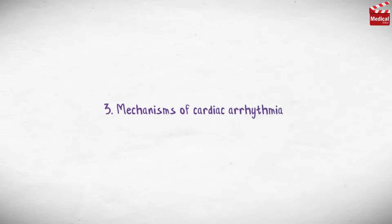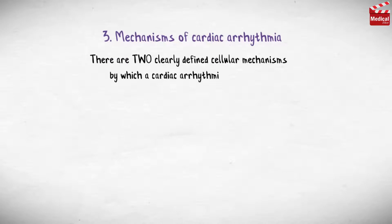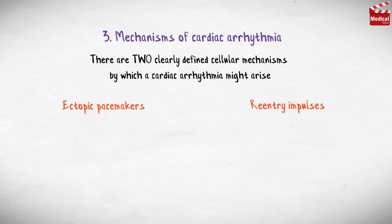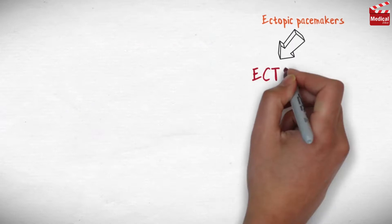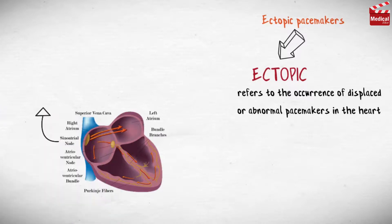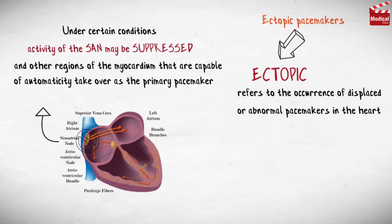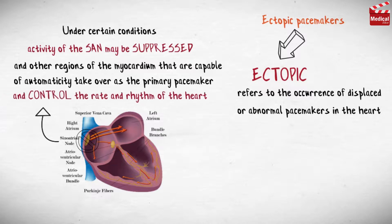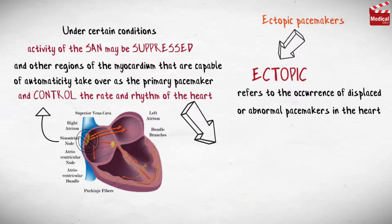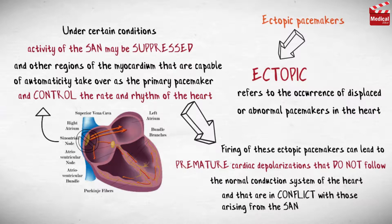Now let's talk about mechanisms of cardiac arrhythmia. There are two clearly defined cellular mechanisms by which a cardiac arrhythmia may arise: ectopic pacemakers and reentry impulses. The term ectopic refers to the occurrence of displaced or abnormal pacemakers in the heart. Under certain conditions, activity of the SAN may be suppressed, and other regions of the myocardium capable of automaticity take over as the primary pacemaker, controlling the rate and rhythm of the heart. Firing of these ectopic pacemakers can lead to premature cardiac depolarizations that do not follow the normal conduction system and are in conflict with those arising from the SAN.